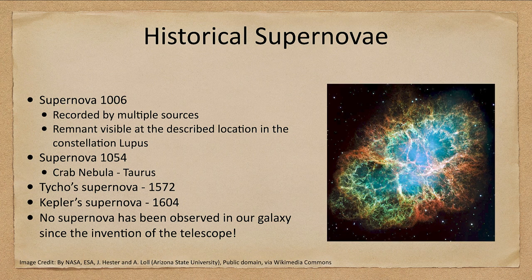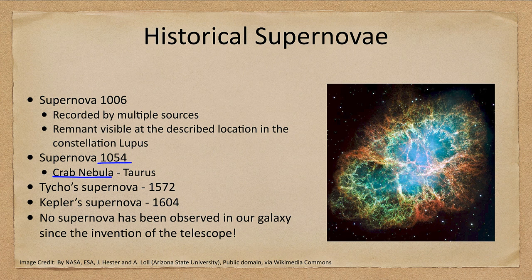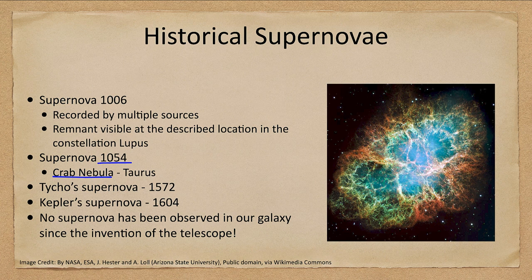One of the more famous supernovae is the Crab Nebula — that famous remnant was seen to explode in 1054, nearly a thousand years ago, and has been expanding outward ever since. At the center there is a compact rotating neutron star, which is the remnant core of the star that existed at this location before the supernova. Astronomers recorded that at this location a new star appeared that was so bright it was visible during the day — that's how bright a supernova can be, even at a safe distance from Earth.